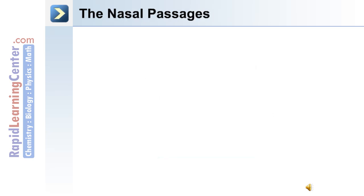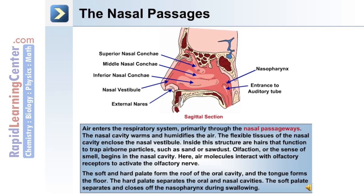Air enters the respiratory system primarily through the nasal passageways, and they warm and humidify the incoming air. The flexible tissues of the nasal cavity enclose the nasal vestibule towards the anterior portion of the nose. Inside this structure are hairs that function to trap airborne particles such as sand or sawdust.